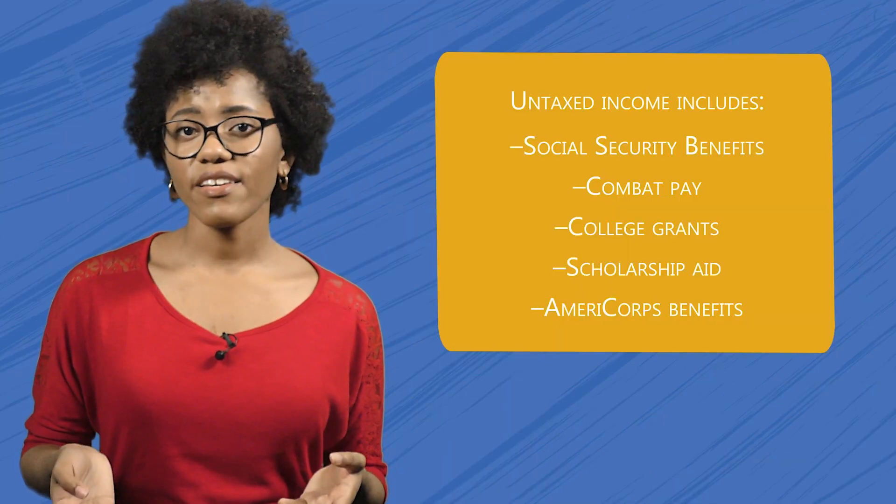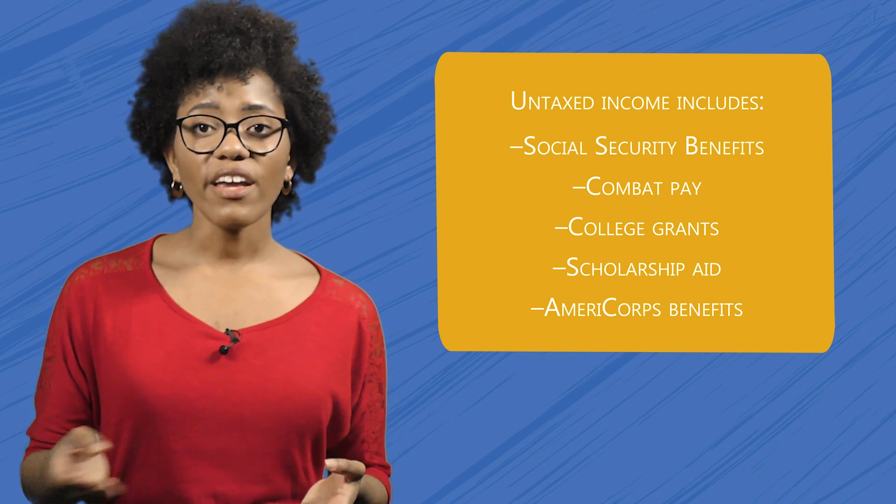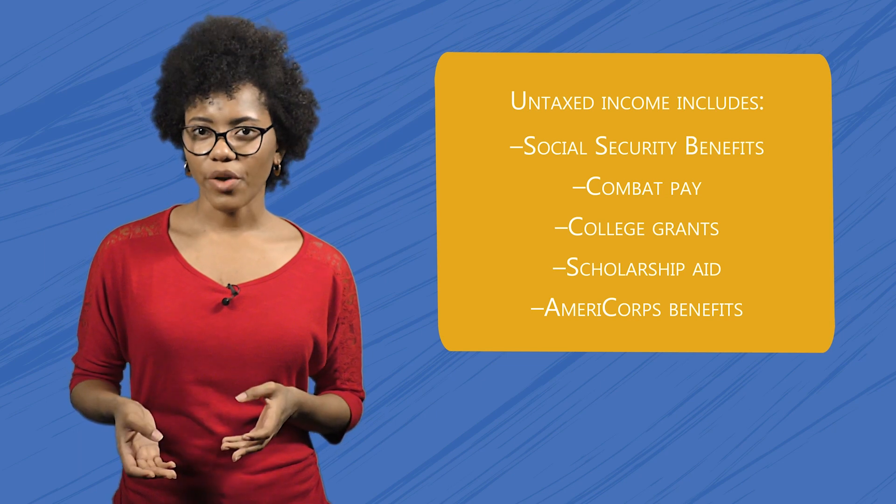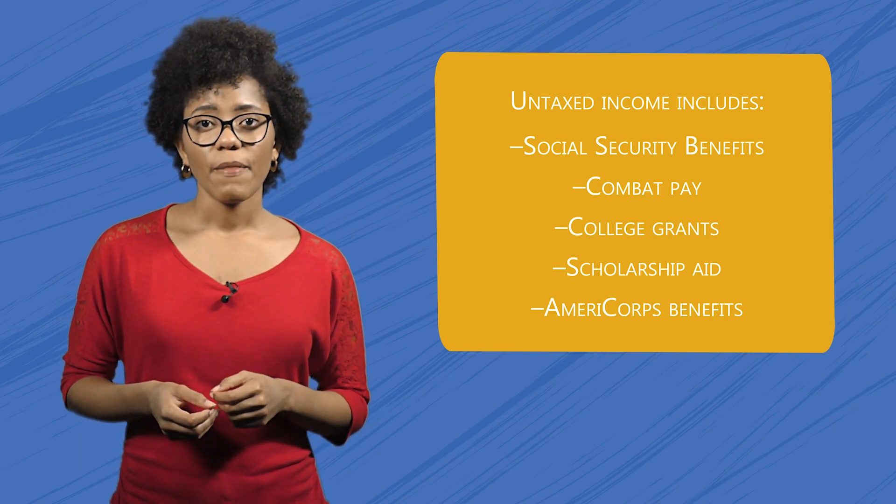Even though most of the questions have been taken care of, there are a few things that won't be transferred — you'll have to answer those questions manually. Make sure to read each one carefully so you know what is being asked. Most of the answers are things that wouldn't be on your tax return, like untaxed income. Untaxed income doesn't just mean social security disability or income benefits — it also includes things like combat pay, college grants, scholarship aid, or AmeriCorps benefits. If you don't know what a term means or have never heard of a particular form, it probably doesn't apply to you. If you've never seen a Schedule K, for instance, you can just put zero for that answer.